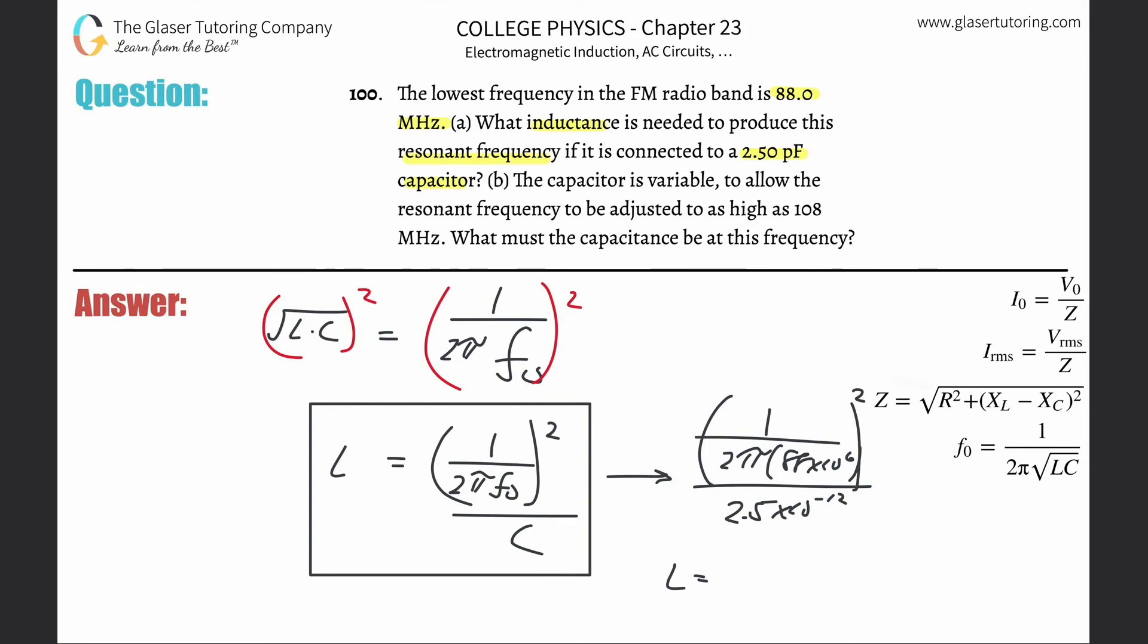And the inductance now is going to be 1 divided by, parenthesis, 2π times 88 times 10 to the sixth. Get that answer and then square it, then divide it by 2.5 times 10 to the minus 12th. We get about 1.31, I guess that would be microhenrys, but I'm going to leave that as times 10 to the minus sixth henrys. I always put things in the standard units. And then that's letter A and letter B.